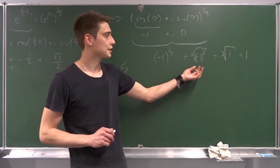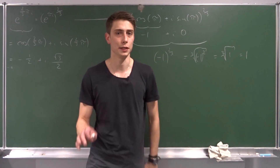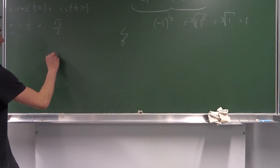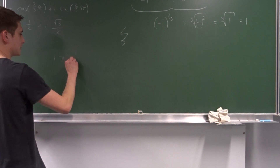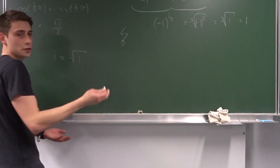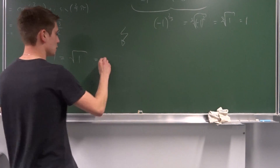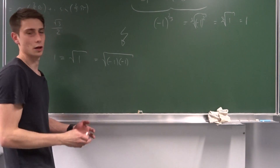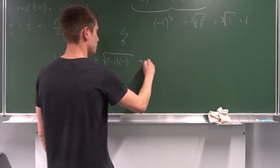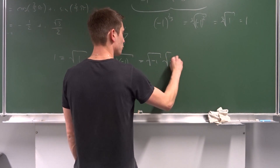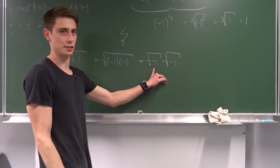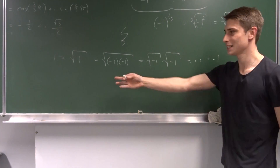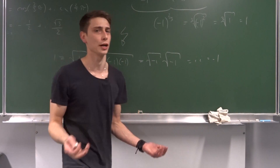The problem is you're dealing with a complex number, and you can't handle roots of complex numbers that way. Here's a famous illustrative example: one equals the square root of one, which we can rewrite as the square root of minus one times minus one. Expanding, that's the square root of minus one times the square root of minus one, which is i times i, and that equals minus one. So one equals minus one — something's clearly not right.